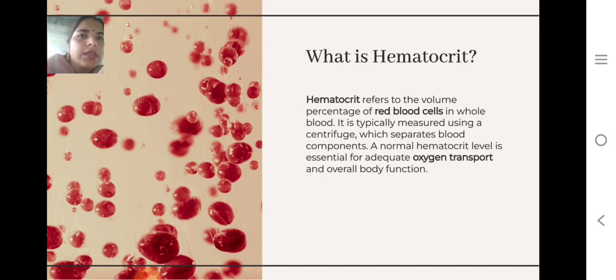What is Hematocrit? Hematocrit refers to the volume percentage of red blood cells in whole blood. It is typically measured using a centrifuge which separates the blood components. A normal hematocrit level is essential for adequate oxygen transport and overall body function.